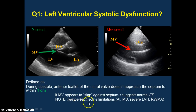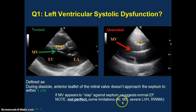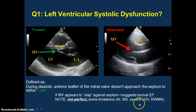A lot of times you can just eyeball it and see whether or not the mitral valve appears to slap up against the septum. When systolic function is impaired, that anterior leaflet of the mitral valve often doesn't even come close to the septum. This is called E-point septal separation, and it has limitations including aortic insufficiency, mitral stenosis, regional wall motion abnormalities, or severe LVH. But this is a good place to start for beginners. If the mitral valve appears to slap up against the septum, it suggests a very normal ejection fraction.